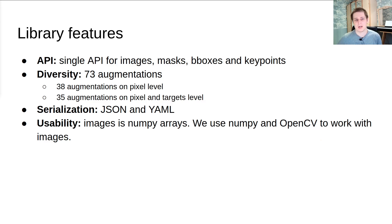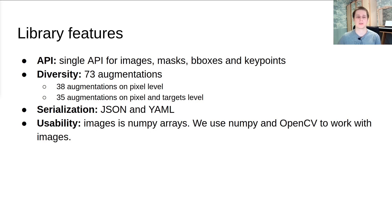The augmentations library gives us a single API for images, masks, boxes, and key points. At this time, our library contains more than 70 different transforms, including 38 transforms that work only on pixel level — like color shifts or blur — and 35 transforms that work both on image and target level, like crops, image rotations, or image shifts.